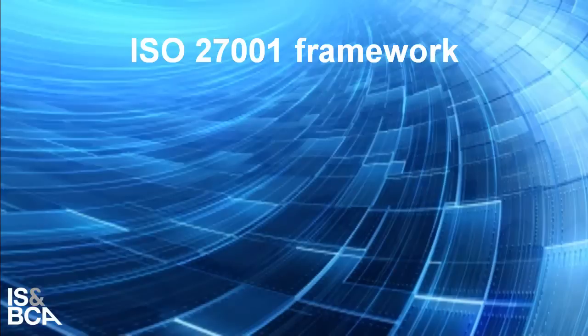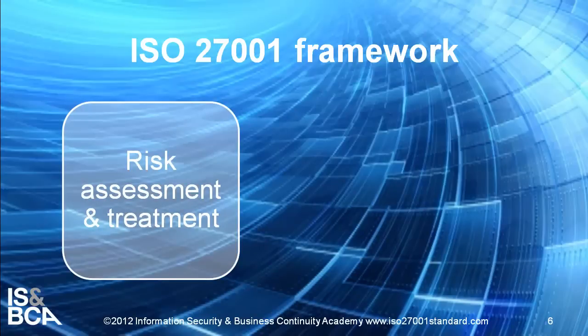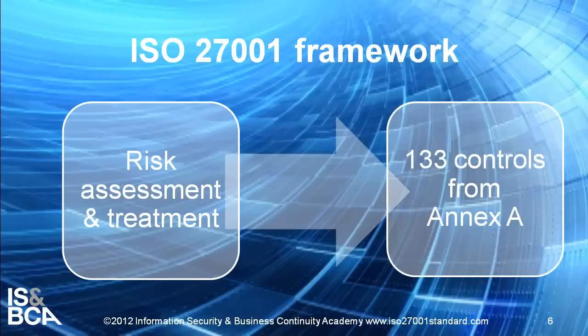So how do you set up an ISMS? First, you need to find out what can go wrong with your information — which threats can endanger the confidentiality, integrity, and availability of each piece of information in your company. This is done through a process called risk assessment. Once you know where the risks are, you select appropriate controls or safeguards for each risk you find unacceptable. ISO 27001 offers 133 controls in its Annex A, and it enables you to do this process in a systematic way so that you wouldn't forget anything important.